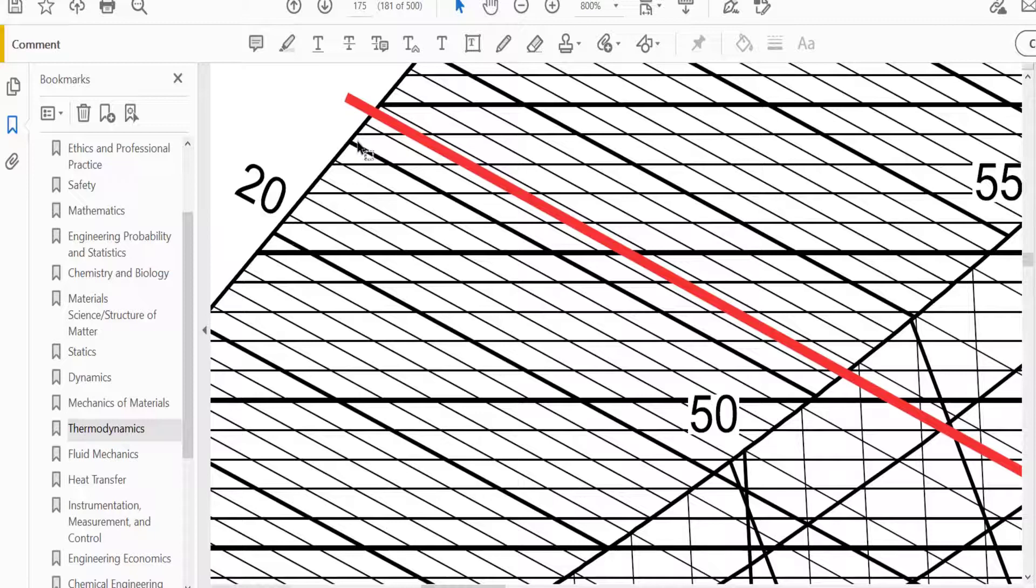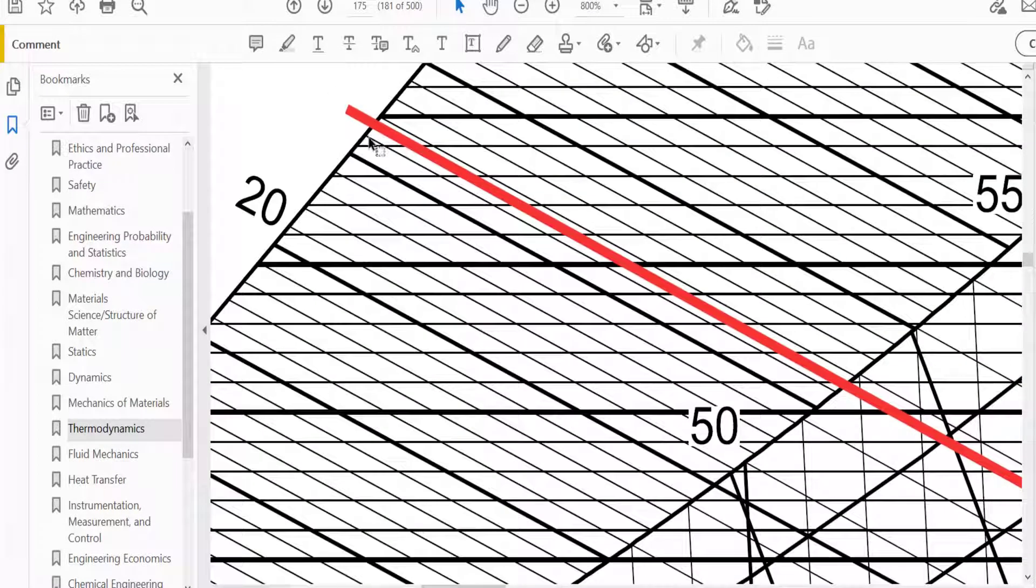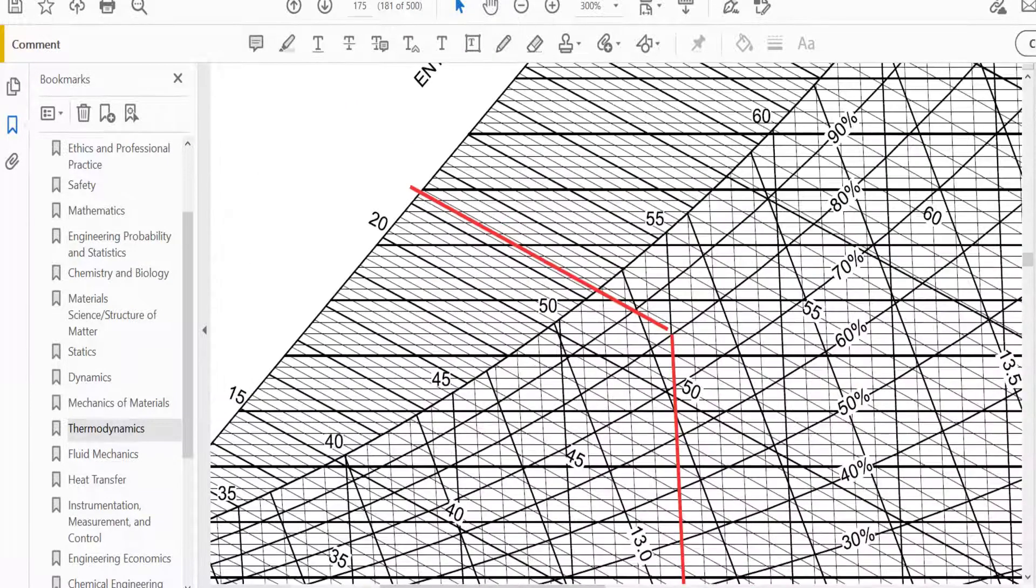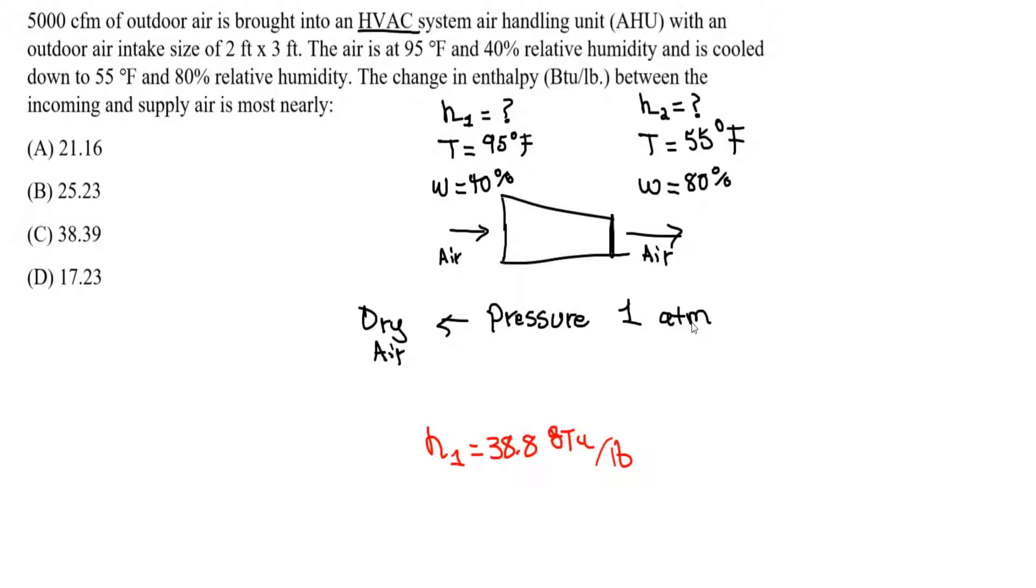So this is 20, this is 21, and this is going to be 21.2, this is 21.4, so we're in between these two. Counting the increments, this is 21.3, this point. So this is going to be our H2, 21.3, H2 equals 21.3 BTU per pound.